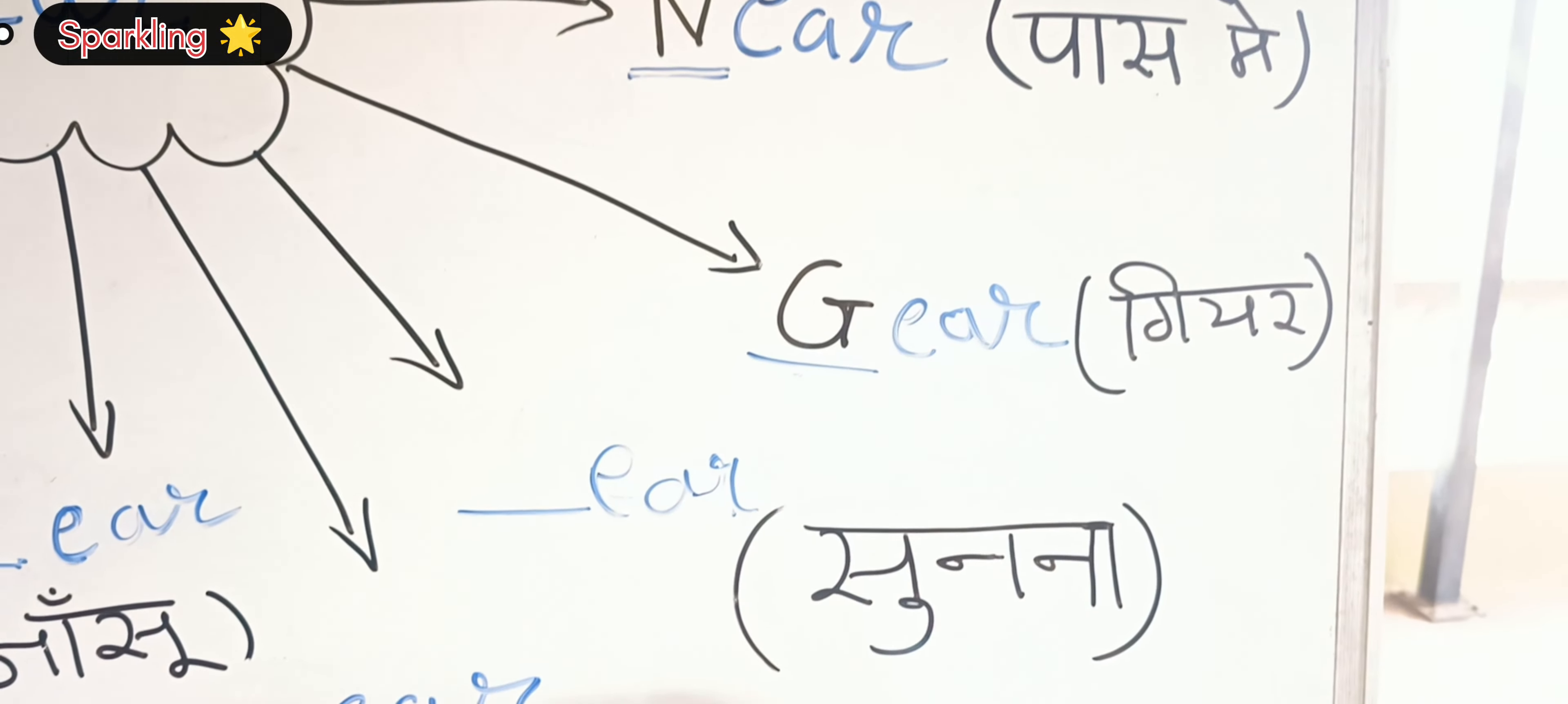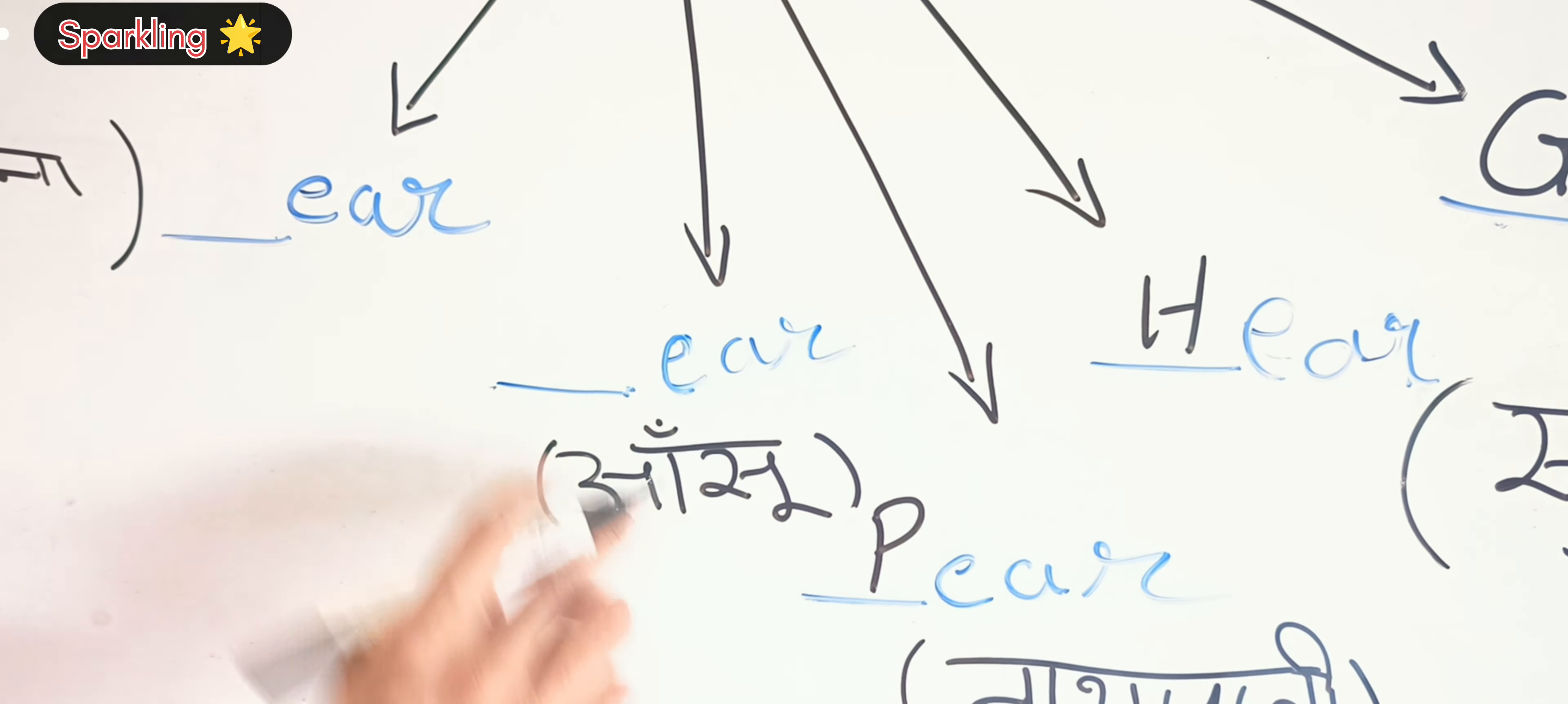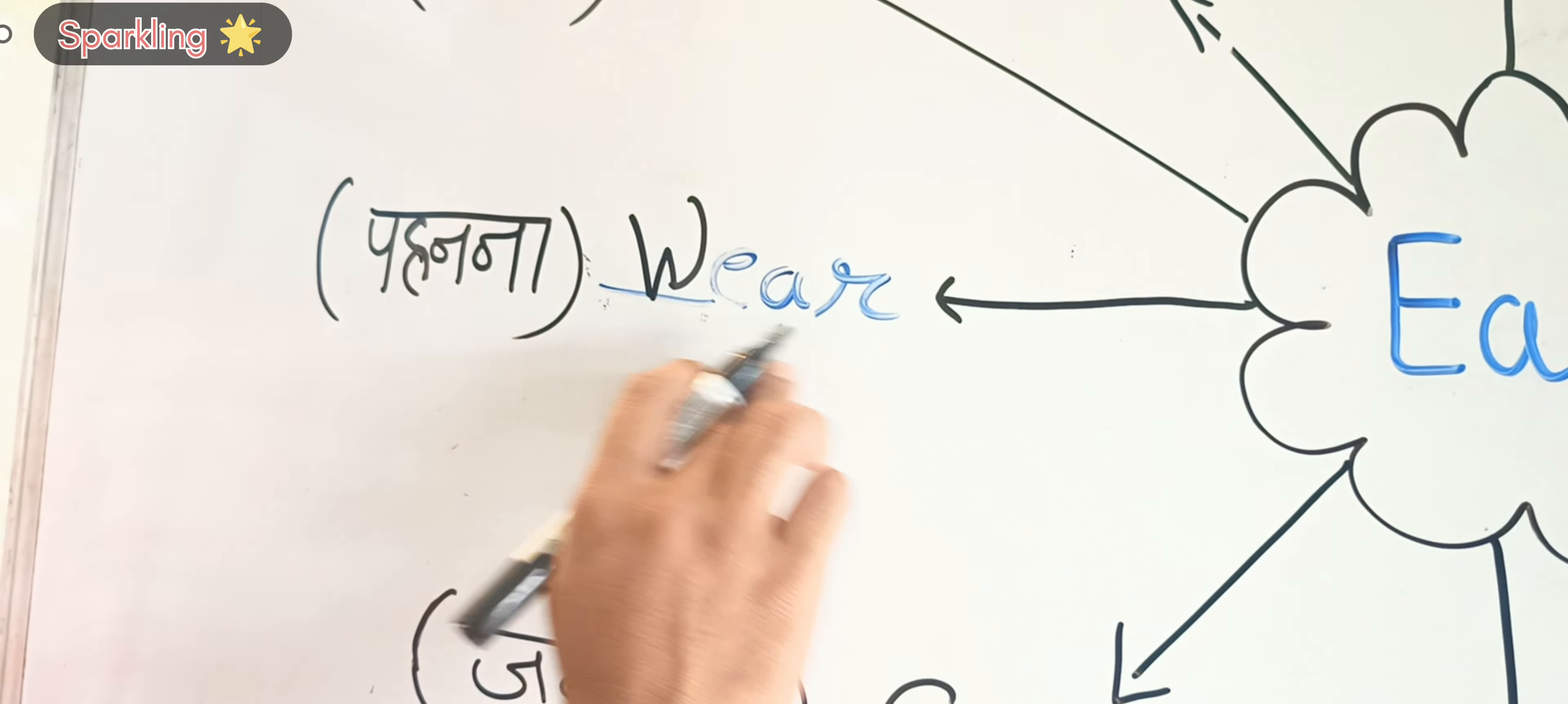'Gear', then 'sunna' which is 'hear'. There's 'bear' - it's a famous animal, the bear. Then 'tear' - 'jalna'. 'Sear' - 'pehenna', which is 'wear'.